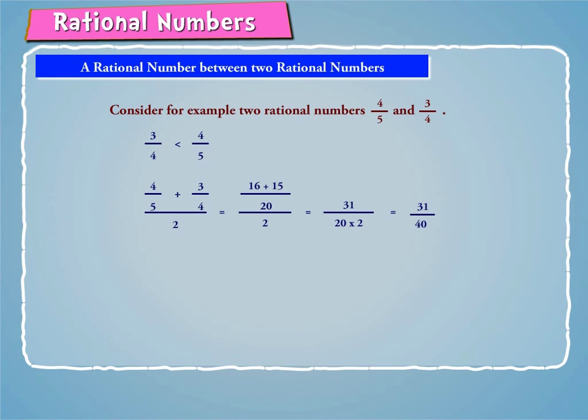Thus, 31 by 40 is a rational number between 4 by 5 and 3 by 4.